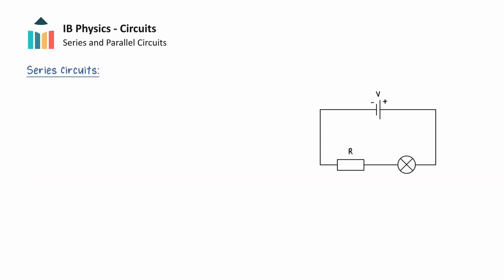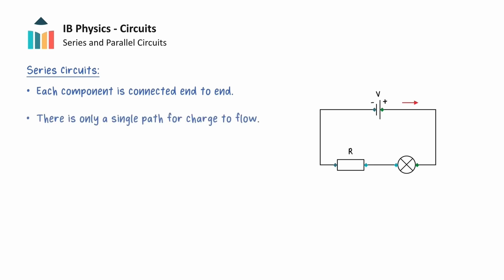In the following circuit, each component — namely the cell, the lamp, and the resistor — are connected end to end. Because of this, there is only a single path for charge to flow between the positive and negative terminals of the cell, and this is known as the series circuit.